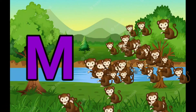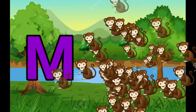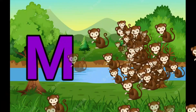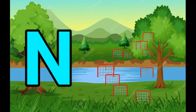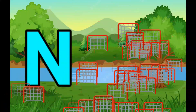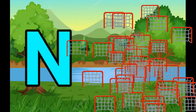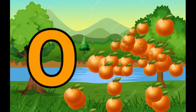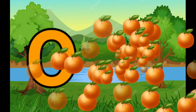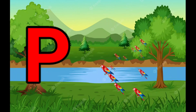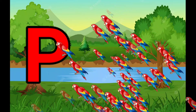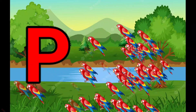M is for... N is for Net, N-N-Net. O is for Orange, O-O-Orange. P is for Pet, P-P-Pet.